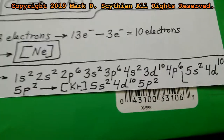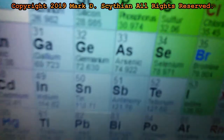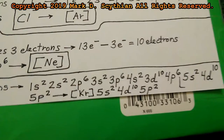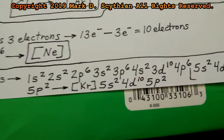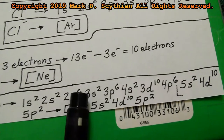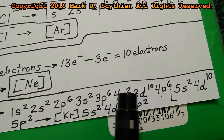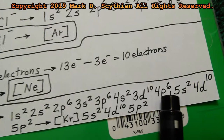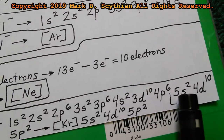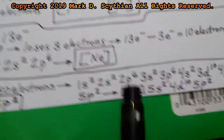Many times the answer won't be in longhand; they'll want the notated form. Writing it out longhand allows you to figure out where to truncate for the abbreviation. We back up to krypton at 36 electrons — counts 2, 4, 10, 12, 18, 20, 30, 36 — and put a bracket there. Krypton replaces that entire sequence, then we add 5s2, 4d10, 5p2. That's the correct answer.